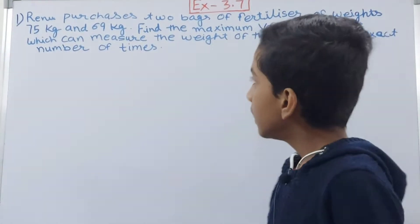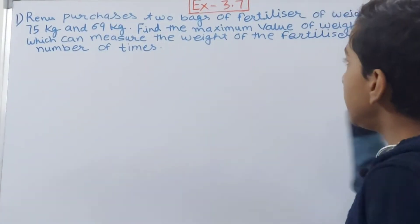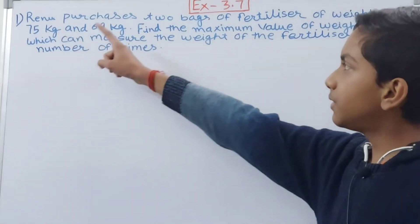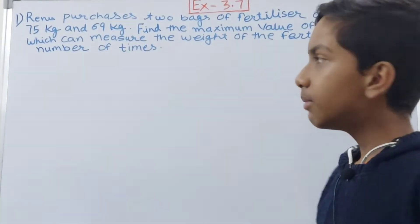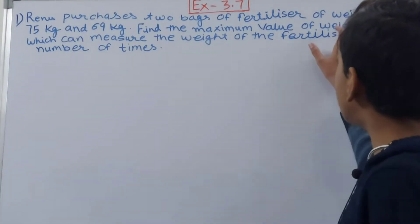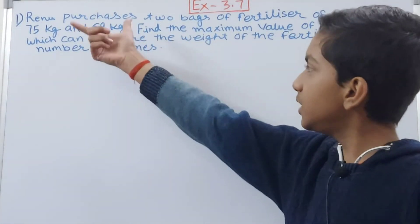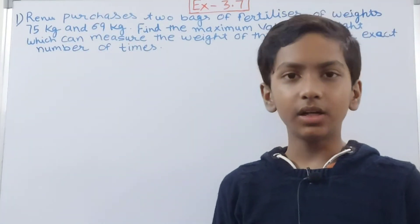Now here, Renu has purchased two bags of fertilizer, and each of these weigh 75 kg and 69 kg. So this is the weight of those two bags. Now it is saying find the maximum value of weight which can measure both of these 75 kg and 69 kg completely, or exact number of times.